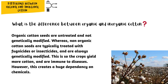What is the difference between organic and inorganic cotton? Organic cotton seeds are untreated and not genetically modified. Whereas non-organic cotton seeds are typically treated with fungicides or insecticides and are always genetically modified. This is so the crops yield more cotton and are immune to diseases. However, this creates a huge dependency on chemicals.